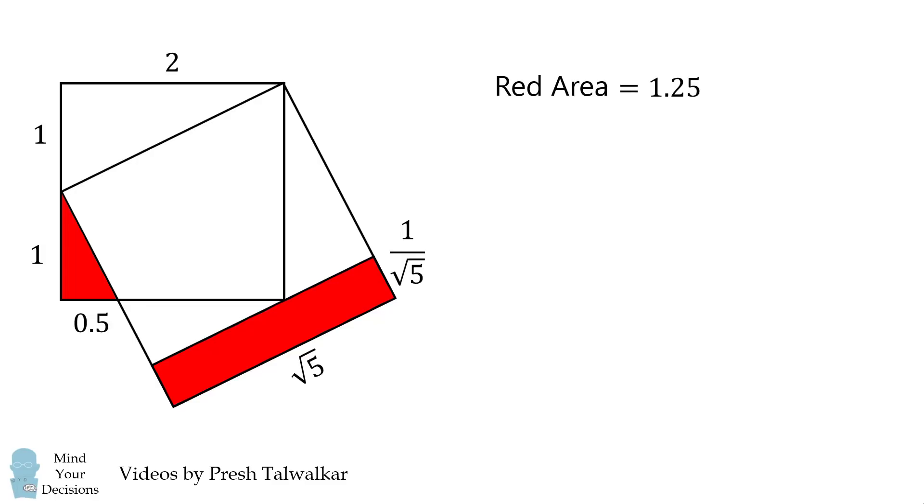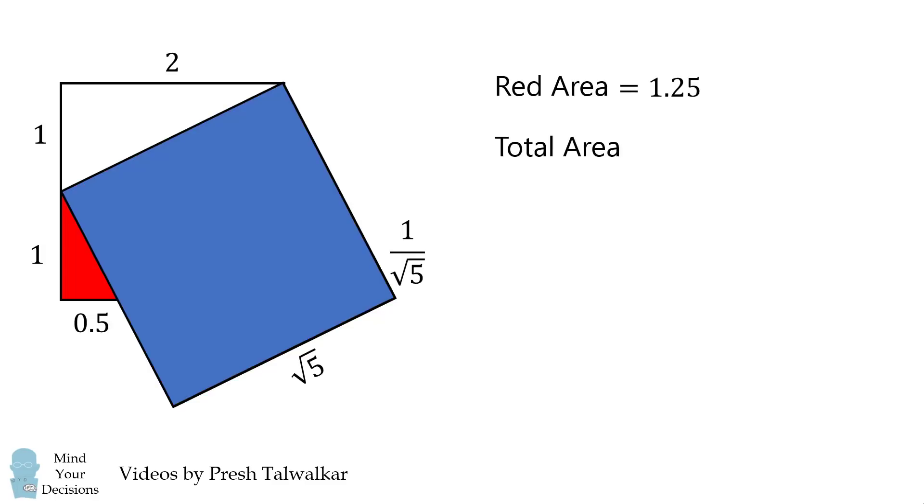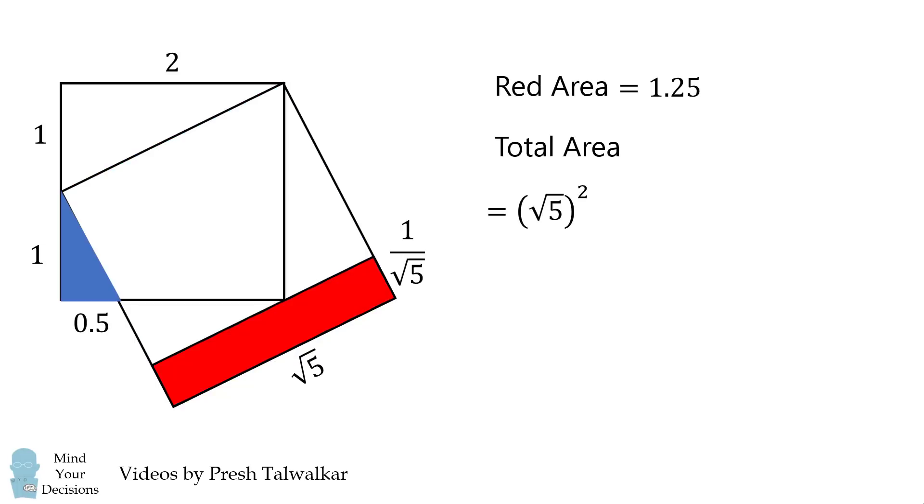We now want to calculate the total area. So we'll do that by calculating the area of the large square, this will be the square root of 5 squared. We then want the area of this triangle, which will be 1 times 0.5 all over 2. And then we have the area of this triangle, which is 1 times 2 all over 2. This all simplifies to be 6.25.